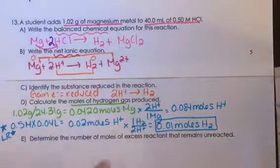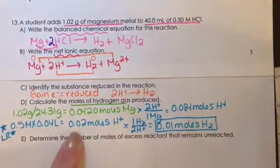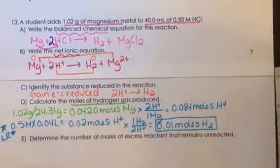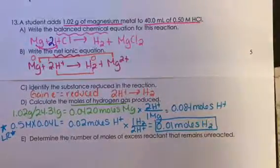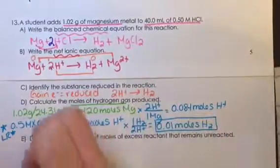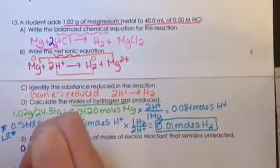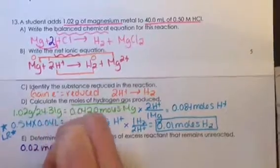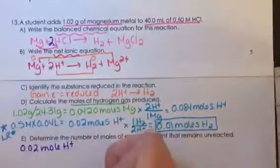Part E, since the hydrogen ion was the limiting reactant, that means that the magnesium was the excess reactant, and so we need to determine how much of it is left over. We again know that the 0.02 moles of hydrogen is limiting everything.